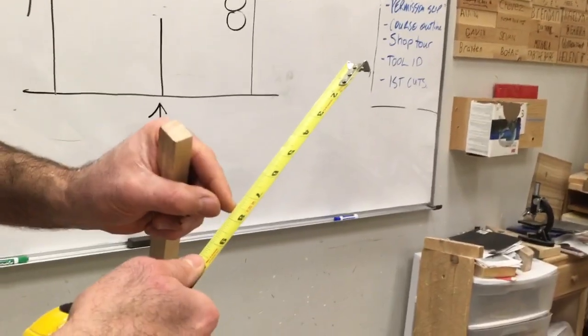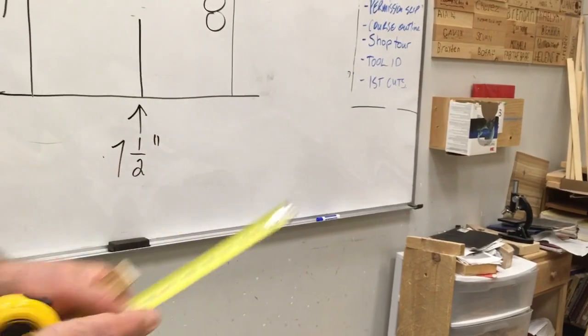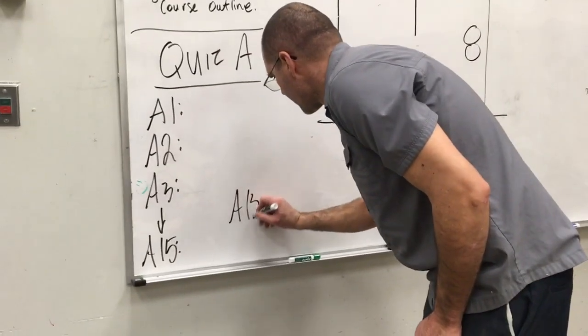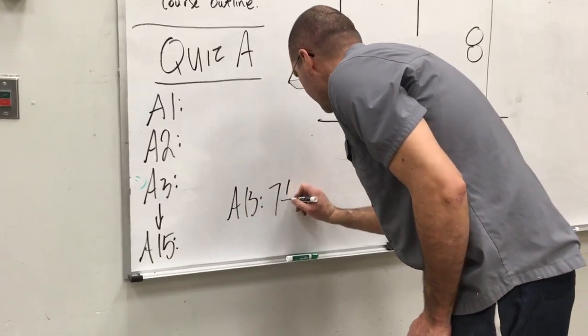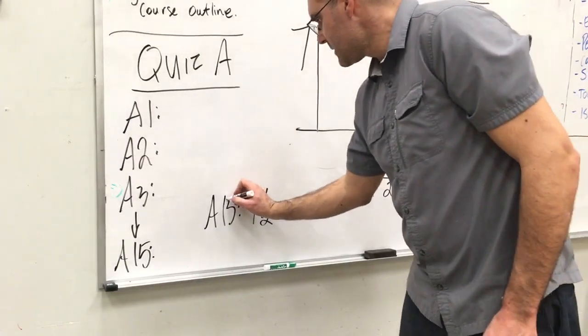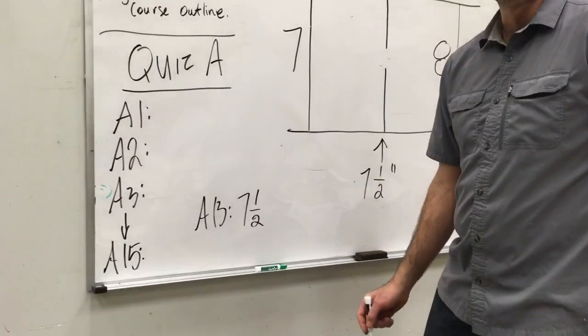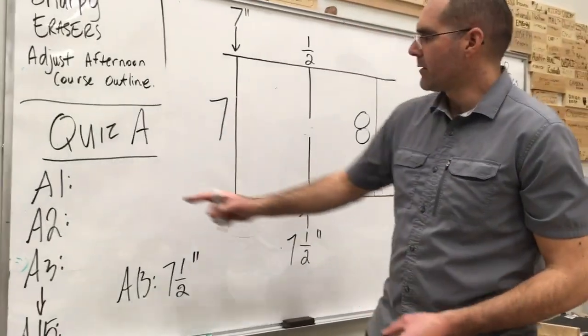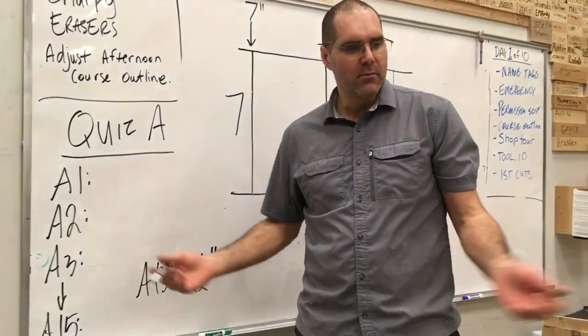So you're going to look at that and say, okay, A13 is seven and a half. So under here where it says A13, you're going to write seven and one half, what? Seven and a half pizzas, seven and a half cucumbers, what? Seven and a half inches. Make sure you put that symbol and you work through from A1 to 15. You measure the sticks.